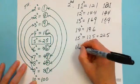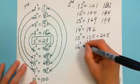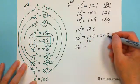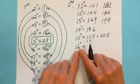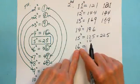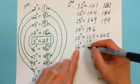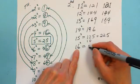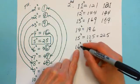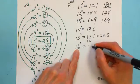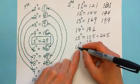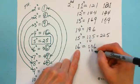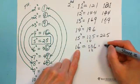16 squared: as we know, 6 squared ends in 6. 1 squared is 1, 6 squared is 36. And 2 times 6 is 12. Carrying over gives 256.